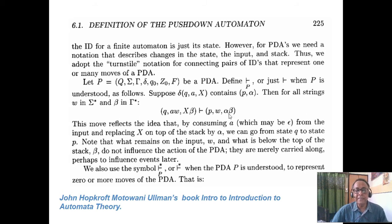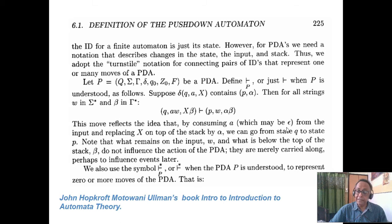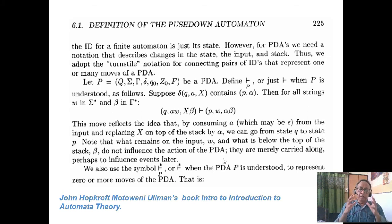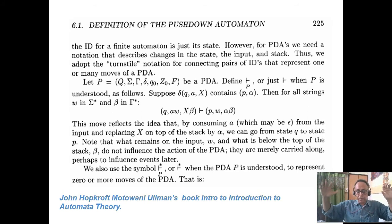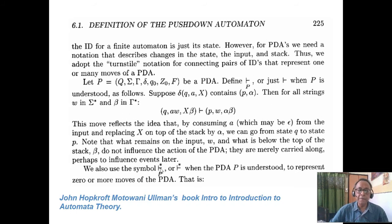If you see the stack is empty, or W is empty, and P is in an accepting state, then you say the machine has accepted the string. There is no idea of consuming A when it may be epsilon — that is a non-deterministic PDA — from the input, and replacing X on top of the stack by alpha. The turnstile star means you make a number of transactions.